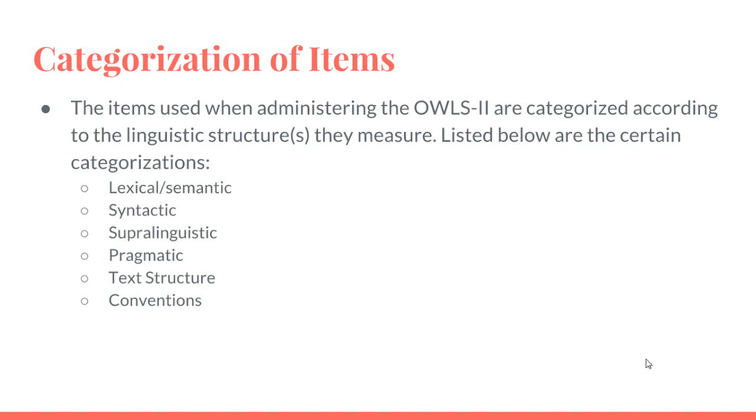And the next is supralinguistic, non-literal language, which are things such as double meaning, inference, verbal reasoning, figurative language, indirect requests, and humor.